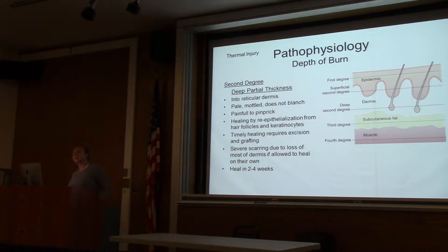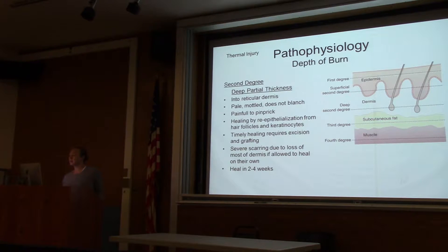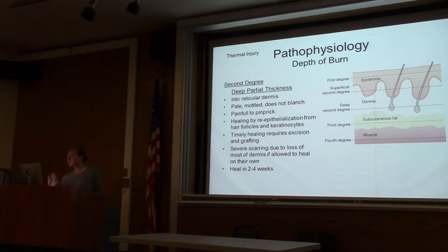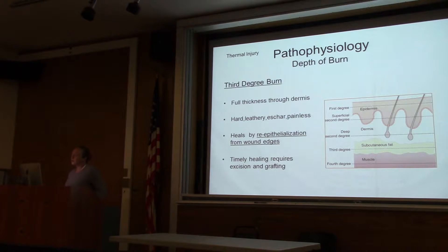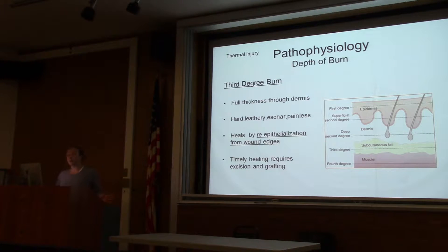Deep partial thickness burns go into the reticular dermis. The skin is pale and doesn't blanch. They still have intact nerve sensation, so they are painful. They can heal by re-epithelialization but can take about three to four weeks, so these patients don't necessarily need skin grafting. However, if the burn is over a joint, it can cause limitation of range of motion. Third-degree burns involve the entire epidermis and dermis — hard and leathery. With the nerves involved, these are painless burns.